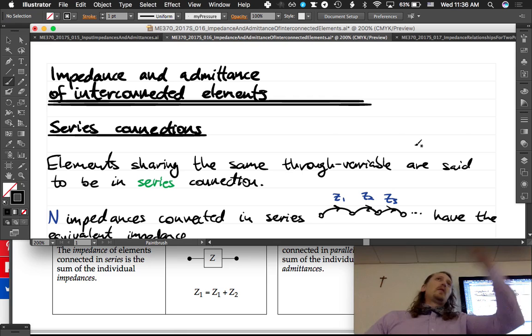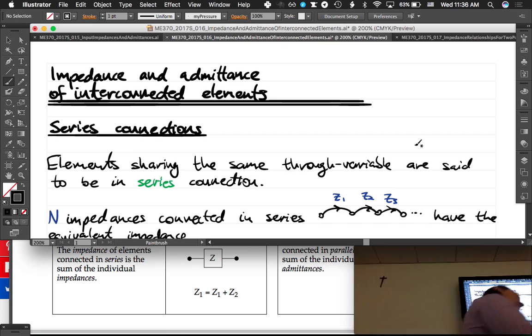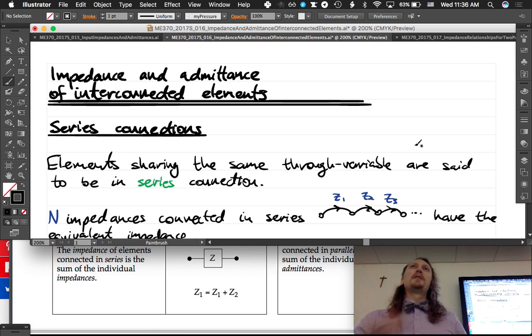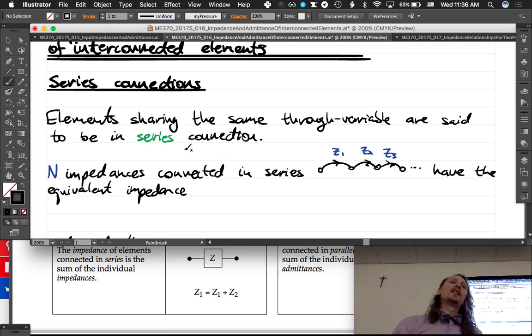So what happens if you put two of them in series though? Should we just give up if our system's more than one element? Should we just walk away? I challenge you not to walk away, to instead review these notes because it's very easy to combine the impedances and admittances of individual elements.